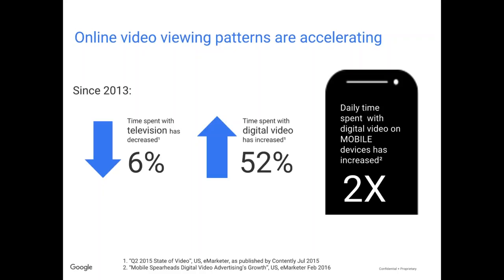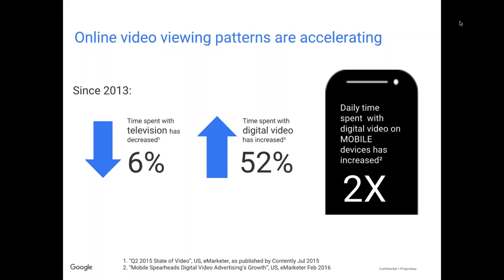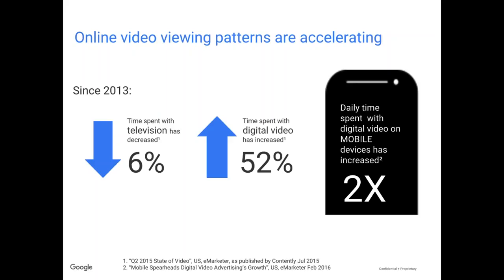Before I go into the actual platform of YouTube, the first stats I wanted to show you go back to that macro trend about online video viewing really growing. Since 2013, time spent watching television has actually decreased by 6%. Whereas all of us still spend a lot of time watching TV, overall our time spent with television has gone down a little bit in the last three years. Whereas time spent with digital video — whether on Facebook, searching out a late-night TV skit, watching a music video, or streaming to your television with Chromecast — has increased over 50% in just three years. And specifically, mobile video time has increased two times.